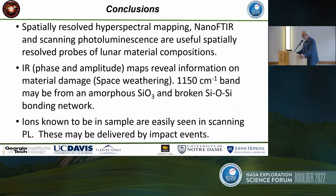Our conclusions are that spatially resolved hyperspectral mapping — in particular nano FTIR and scanning photoluminescence done together — are very useful to probe lunar material compositions. The phase and amplitude maps reveal information about material damage, which I broadly call space weathering. The 1150 wavenumber band is a good signature of broken silicon–oxygen bonds, and the ions known to be in the sample from the NASA database are ones we can see easily, though they appear specific to this particular sample.